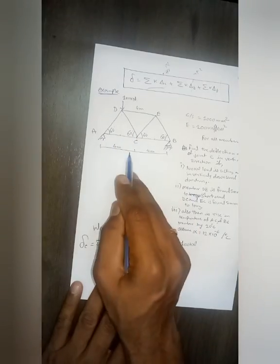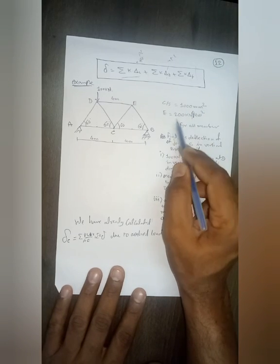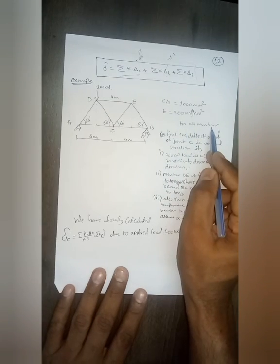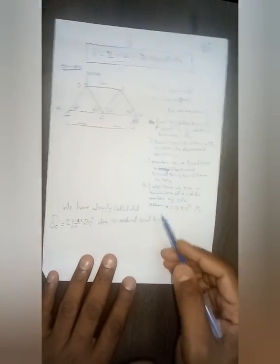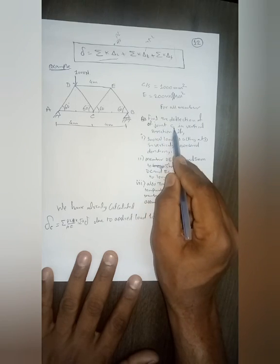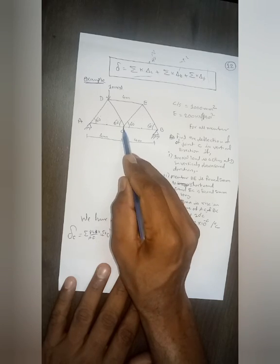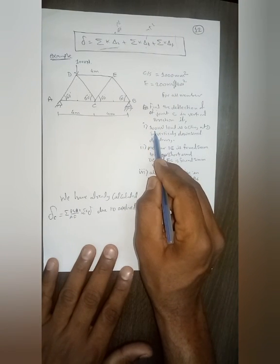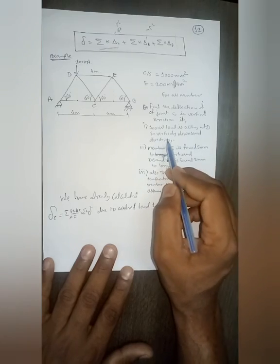We'll continue with the same example — the same truss is given. The cross-sectional area of all members is assumed as 1000 mm², elastic modulus is 200 kilo Newton per mm², and all member lengths are 4 meters with all angles at 60 degrees. We need to find out the deflection of joint C in the vertical direction.